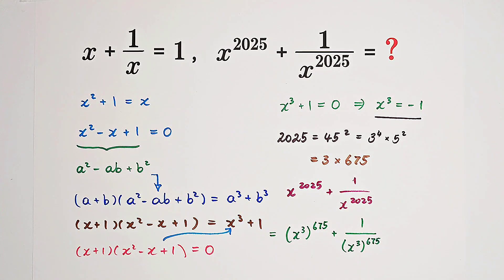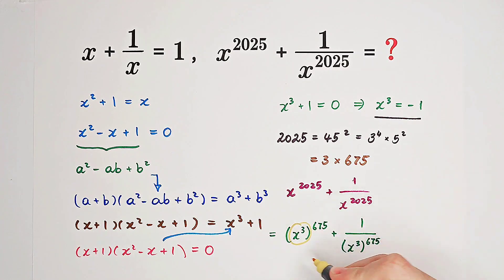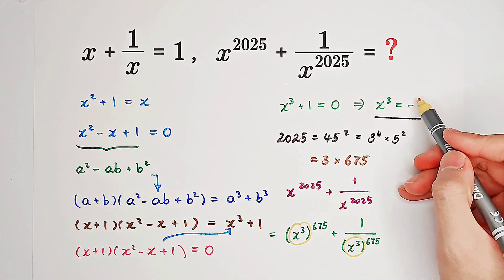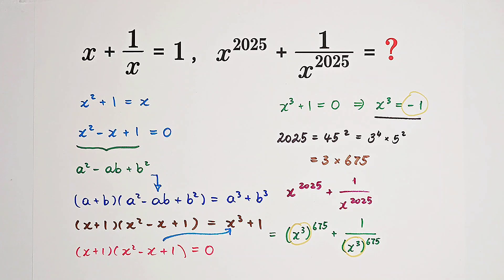Since x cubed is negative 1, negative 1 to the power of an odd number is still negative 1. So, the outcome is negative 2.